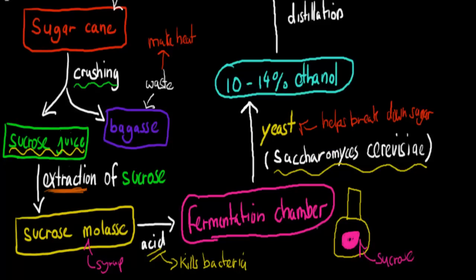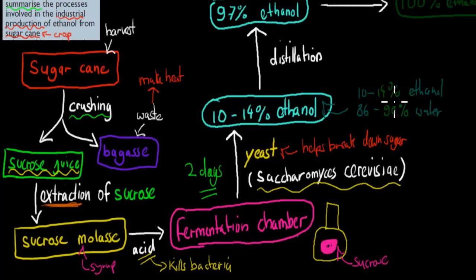Now after we've left this, this usually takes some time. This might take two days. So it might be in that chamber for two days. And by the end we have ethanol. But it's 10 to 14% ethanol. So the rest of the, so it's 10 to 14% ethanol and the rest would be water. So now we have about 86 to 90% water. So the majority is water and the rest is ethanol.